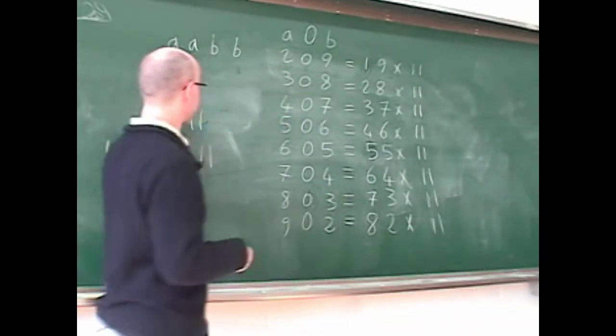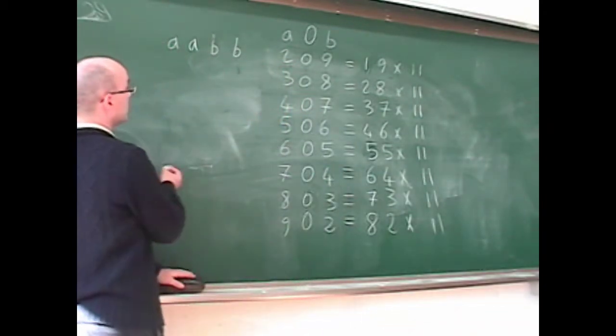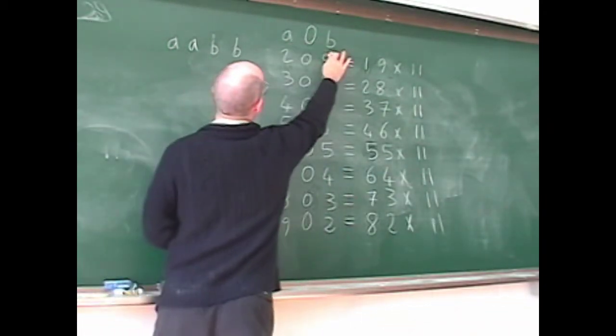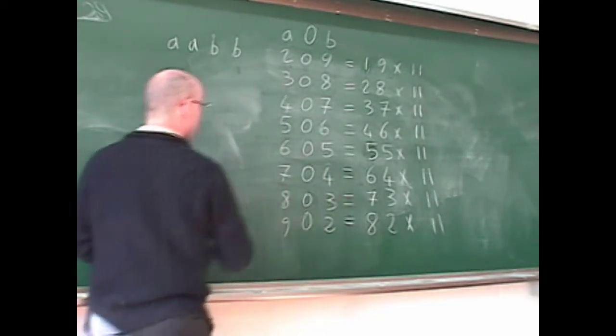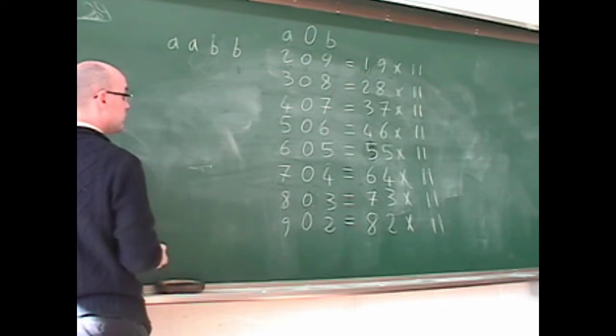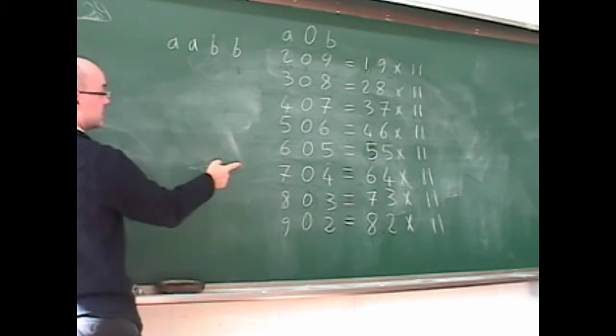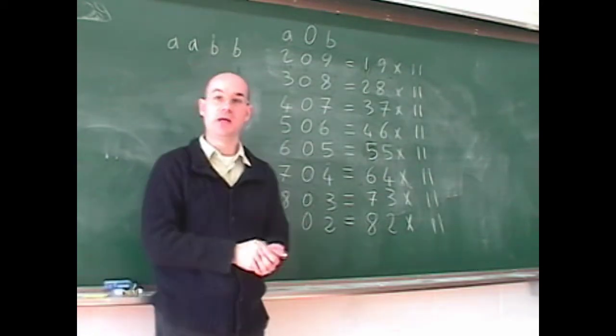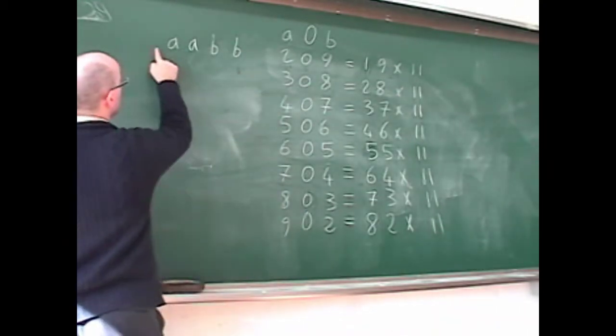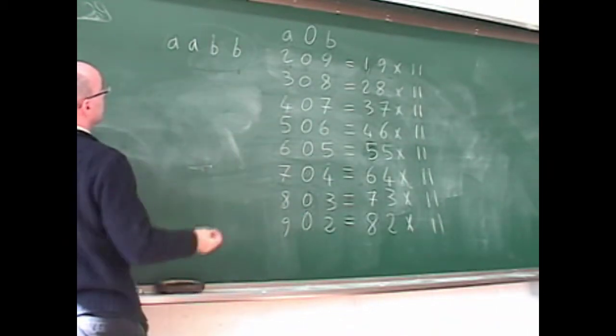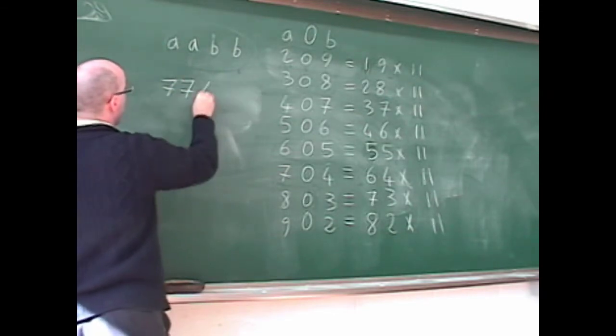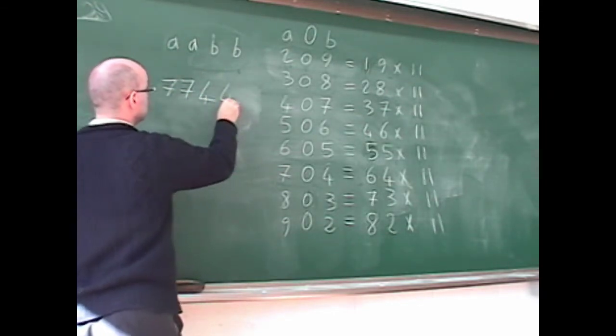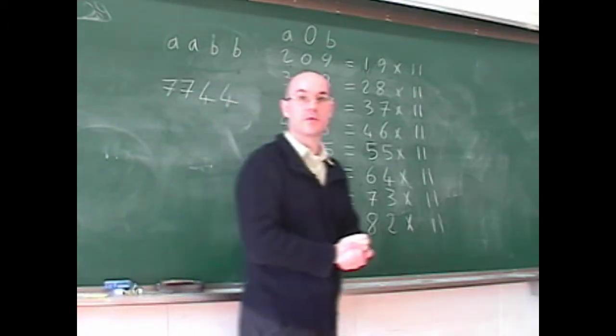So in other words, our A0B is 704, which means A is 7 and B is 4, which means that the number we're looking from the beginning is 7744. This is a perfect square, this is the square of an integer.